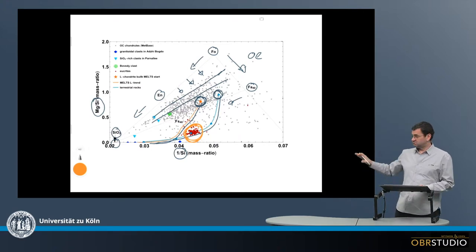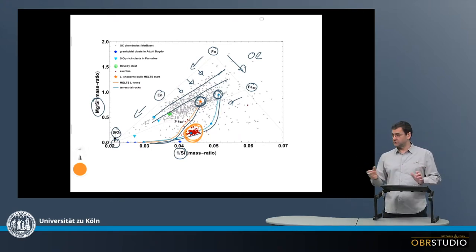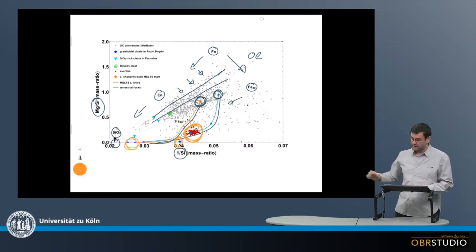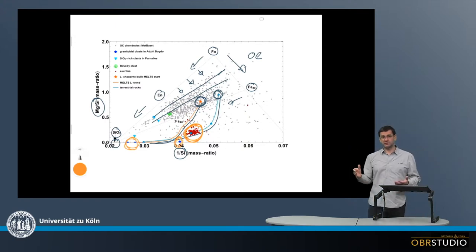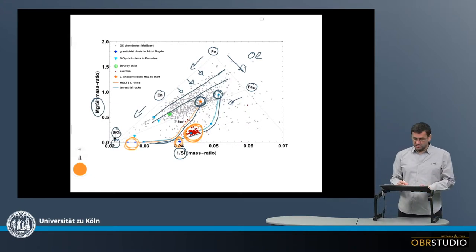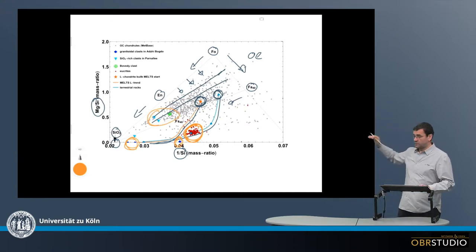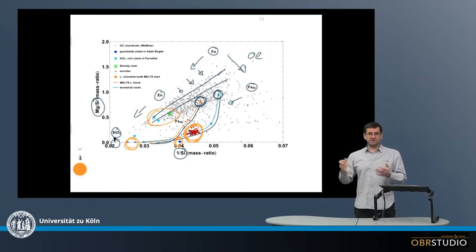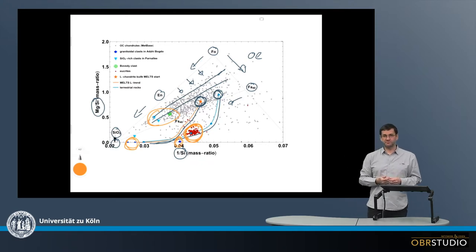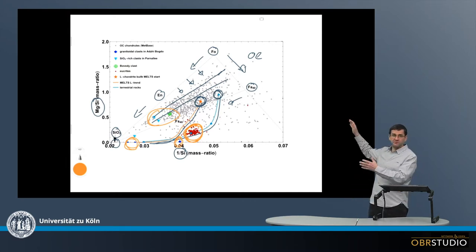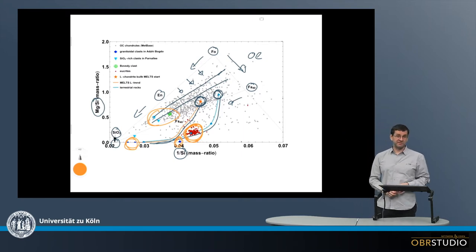Also, there are sometimes glasses found that are granitoid in composition, and these also plot close to such an evolution trend. And then there are silica-rich glasses, which plot more where the other chondrules are. So the conclusion here, quite clearly, is that chondrules do not reflect any kind of differentiation. Rather, on the contrary, chondrules clearly reflect that they form from some kind of mixture between roughly olivine and silica or pyroxene material.